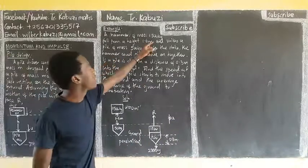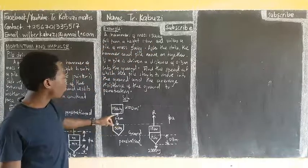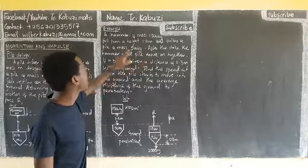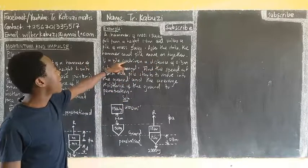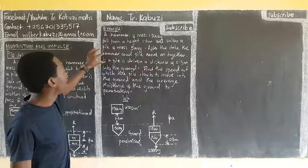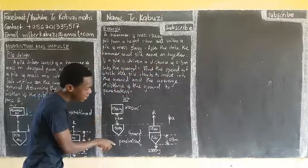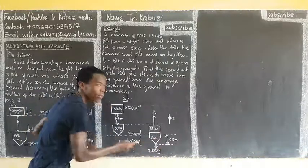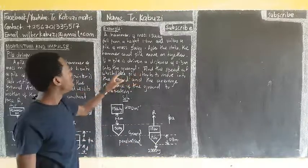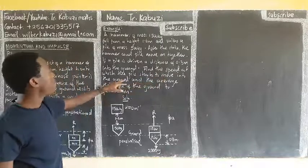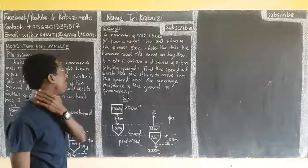Now there is an example. A hammer of mass 1500 kilograms falls from a height of 1.6 meters and strikes a pile of mass 500 kilograms. After the strike, the hammer and the pile move together, and the pile is driven a distance of 0.3 meters into the ground. Find the final speed at which the pile starts to move into the ground, and the average resistance from the ground to penetration.